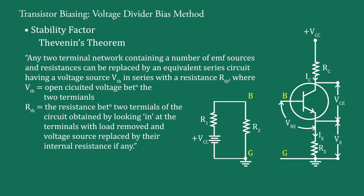But we assume internal resistance of VCC is zero. So, now RTH is the resistance measured between terminals B and G after disconnecting the supply VCC. That is RTH equal to R1R2 upon R1 plus R2.